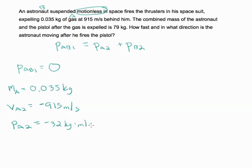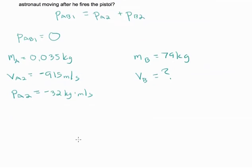And the mass of the astronaut is 79, and we are asked to find the velocity. So we can plug into our conservation equation. We know that zero equals negative 32 plus PB2. So our momentum of the astronaut afterwards has got to be equal to positive 32 kilograms times meters per second.